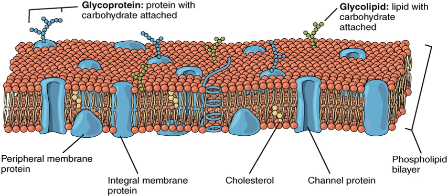Both the plasma membrane and internal membranes have cytosolic and exoplasmic faces. This orientation is maintained during membrane trafficking — proteins, lipids, and glycoconjugates facing the lumen of the ER and Golgi get expressed on the extracellular side of the plasma membrane.